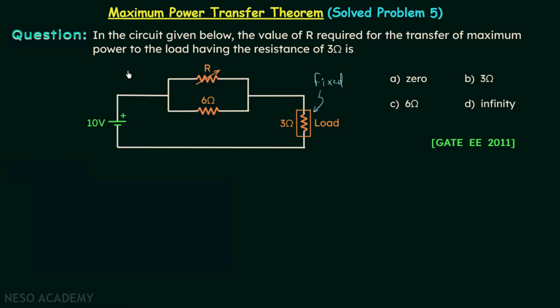So what is case number 2 of maximum power transfer theorem for DC circuits? Case number 2 is: load is fixed but the source resistance is variable. We will see what has to be done in case number 2 to transfer the maximum power to the fixed load.